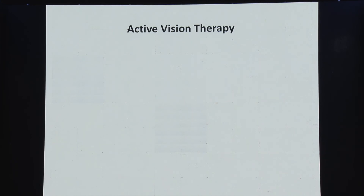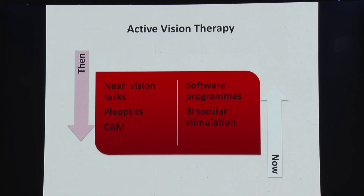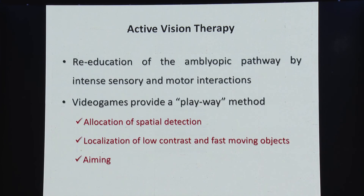Active vision therapy is coming up in a big way. Earlier it was active vision therapy in the form of near-vision tasks, pleoptics, and ORCAM. Nowadays it is all about software programs and binocular stimulation — the idea being to provide binocular stimulation to restore binocularity. Active vision therapy is basically re-education of the amblyopic pathway by intense sensory and motor interaction. Video games provide a playful method — the child is more interested and engaged, so they are more compliant. Various apps have been developed that help with binocular interaction.